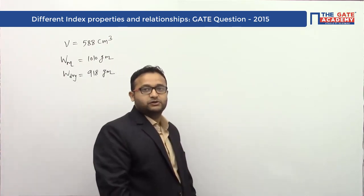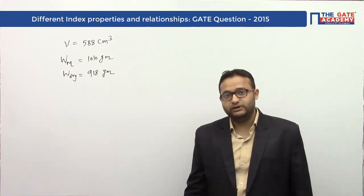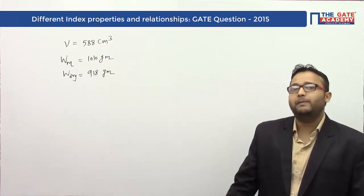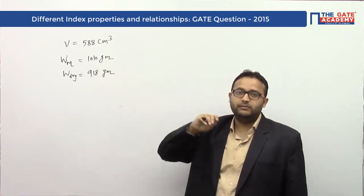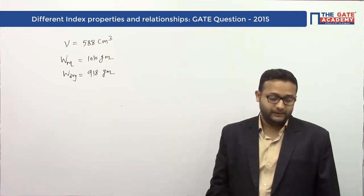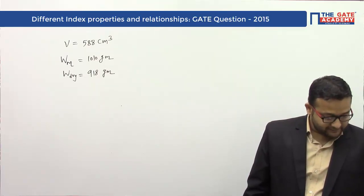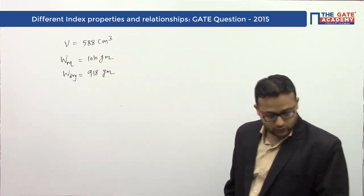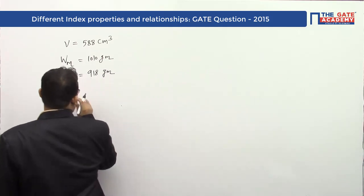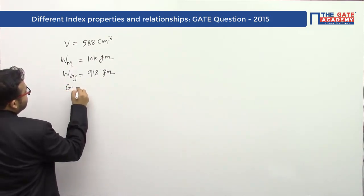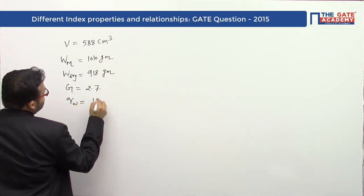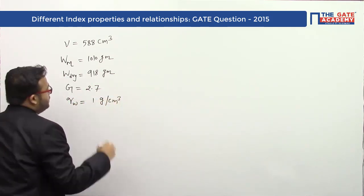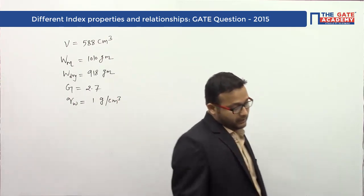I cannot write it as fully saturated weight because we don't know the degree of saturation. It may be partially saturated, so it is the weight of moist soil. The dry weight means the weight of solids only. The specific gravity G is 2.67, and the unit weight of water gamma_w is 1 gram per centimeter cube. These are the given data.